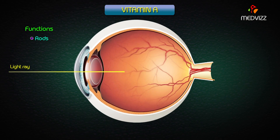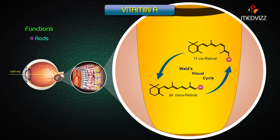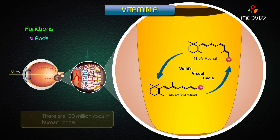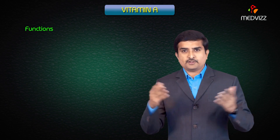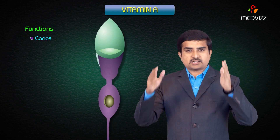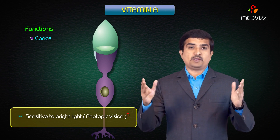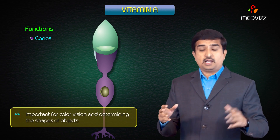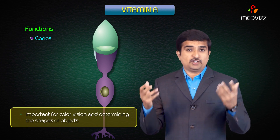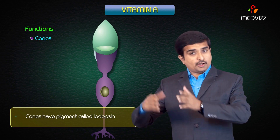On exposure to light, 11-cis retinal is converted into all-trans retinal, and vice versa, as seen in the visual cycle. There are approximately 100 million rods in the human retina. Cones are exclusively sensitive to bright light — photopic vision — and are also important for color vision and determining the shapes of objects. Cones have a pigment called iodopsin, while rods have rhodopsin.